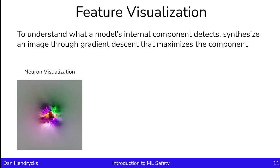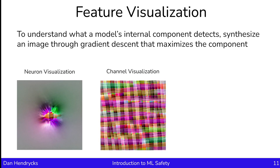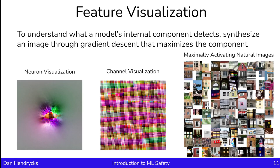A more informative component to visualize is a channel. Channel visualizations are like neuron visualizations — both arrived at through a gradient descent process — but the loss is different. The loss of a channel visualization might be something like the sum of the squares of all the neurons in the channel, and that's what the optimizer is trying to maximize. We can see that the channel visualization in this case has a lot of squares. Looking at real examples, we can see what maximally activates that channel — those images look like windows. This suggests the channel was actually performing some type of window detection.